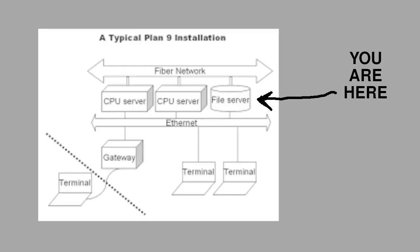If you want a Home Plan 9 grid, the first thing you'll need is a File and Authorization Server. The File Server is there to store all your programs and files, and the Auth Server is to make sure you have permission to access those files and programs. In my case, I'm going to combine the two. You can run them as separate systems.